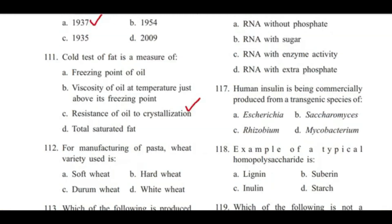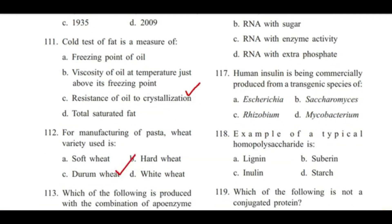Question 112: For manufacturing of pasta, the wheat variety used is — soft wheat, hard wheat, durum wheat, or white wheat? Answer is C, durum wheat.